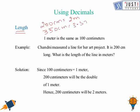Now there is an example. If Chani measured a line for her art project and it is 200 centimeters long, what is the length of the line in meters? As we all know, 1 meter is 100 centimeters, then 2 meters is 200 centimeters. So the answer is 2 meters.